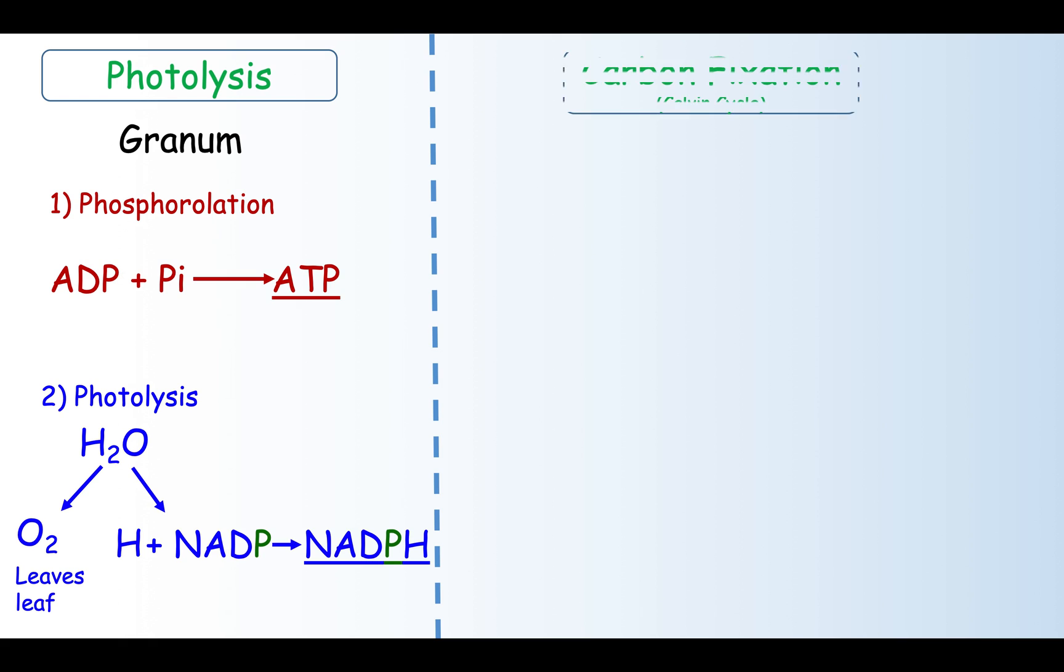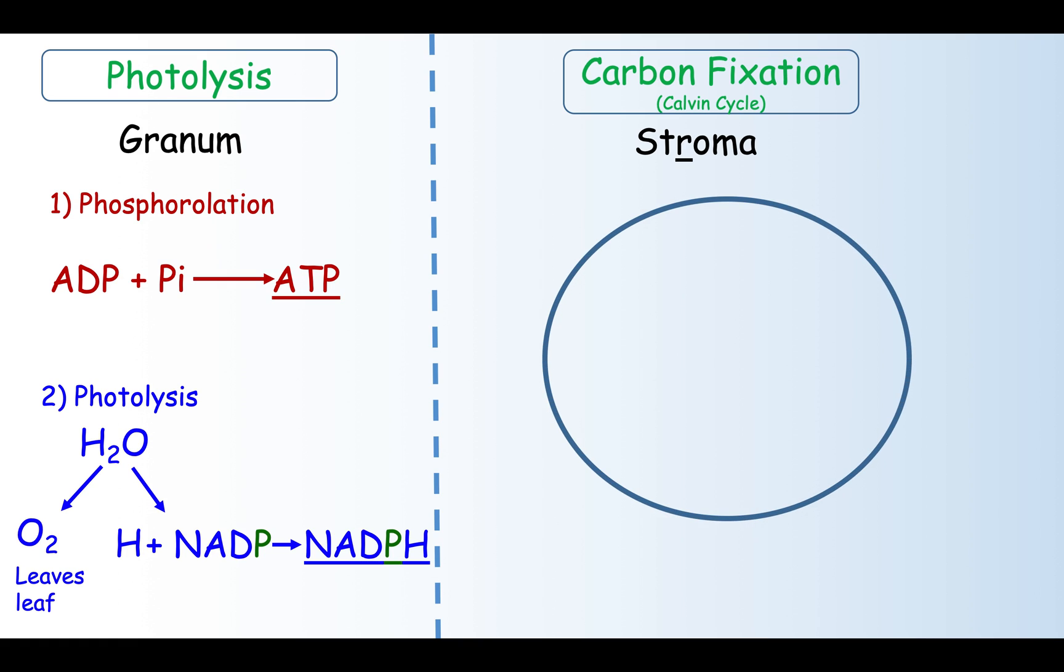The second stage in photosynthesis is the carbon fixation stage. There are three key intermediates which are RUBP, 3-phosphoglycerate and glyceraldehyde. The location of the carbon fixation is in the stroma.